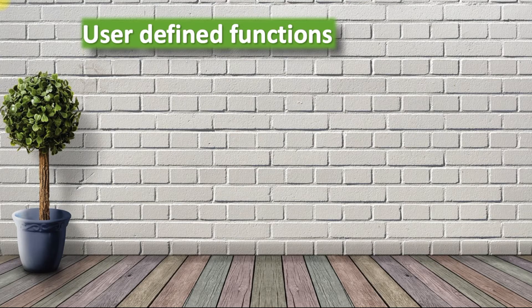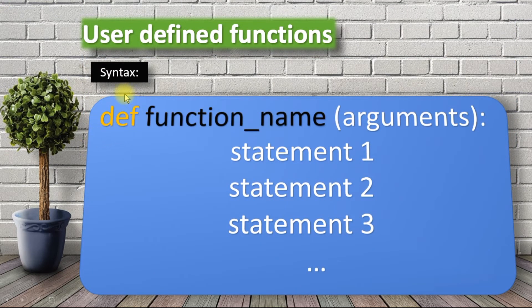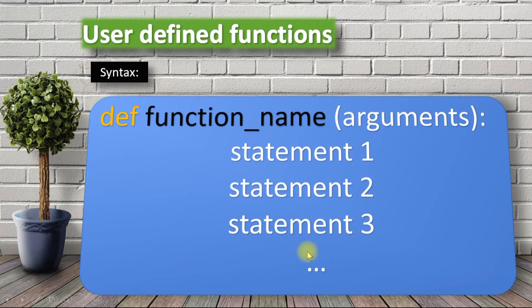Now coming to user-defined functions. The syntax is: first take the def keyword — this is a keyword for defining a function. Then give the function name — you can give any name. In the parenthesis you give the arguments or parameters. The function header ends with a colon. Then give the statements you need inside the function. This is the syntax for defining a user-defined function.